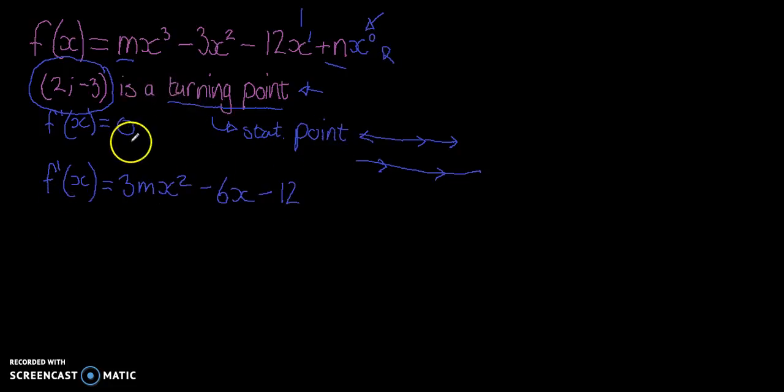Okay, now at the turning point, the derivative will equal zero. Now the turning point is going to be at an x coordinate, which means we have the value of x. And that is a lovely thing, because if we have the value of x and we're able to make the derivative equal to zero, we're actually able to solve for m quite easily.